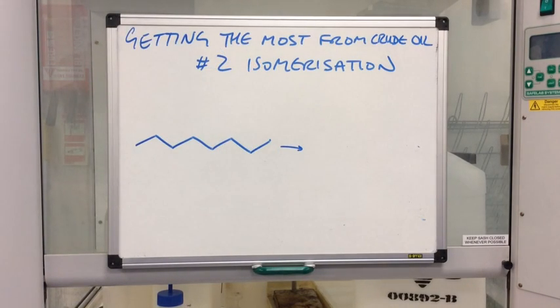So like I said before, this information feeds into the second process the petroleum industry uses to get the most from the crude oil. And this is known as isomerization.